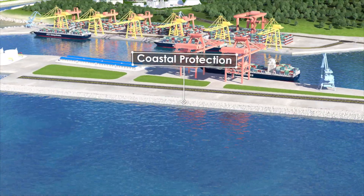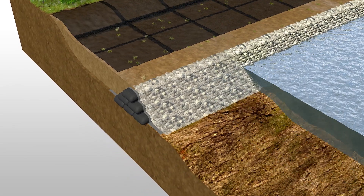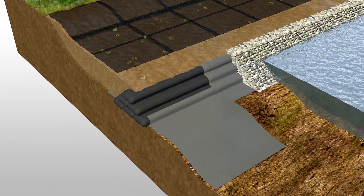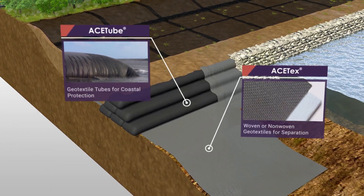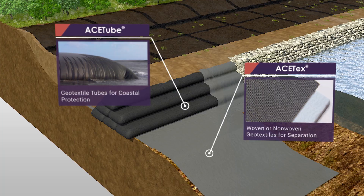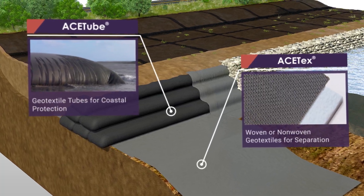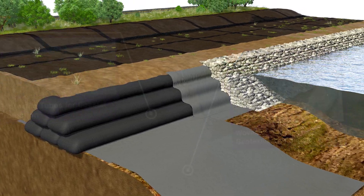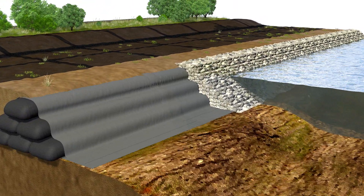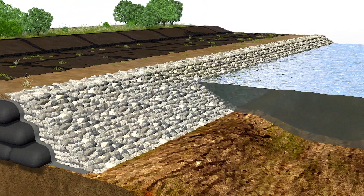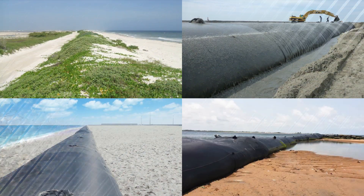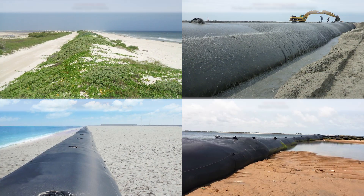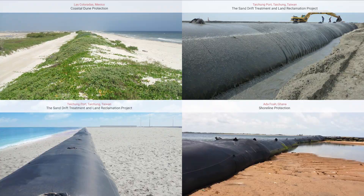Coastal Protection: Building seawall and revetment with ACE tube geotextile tube can effectively decrease the impact energy of the waves. This method is fast and easy, and using in-situ reclaimed sand to fill the geotextile tube can greatly reduce material purchase and transportation costs.